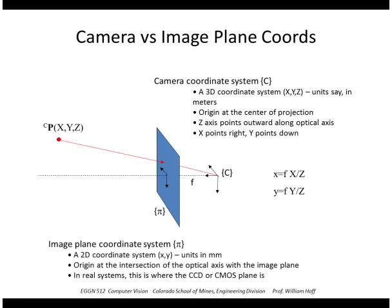The image plane coordinates, these units would be units on the image plane, typically millimeters or something like that. The origin of that system is where the optical axis pierces the image plane, and this image plane is really where the CCD or CMOS plane would be.